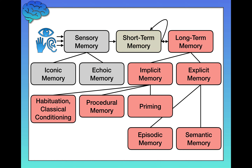Let's talk about long-term memory. There are a lot of different systems here, but we're going to focus on different parts at a time, starting with the right-hand side — explicit memory, which is subdivided further into episodic and semantic memory. I really encourage you to learn the structure as I'm showing it to you, because if you try to learn all these terms in isolation it will be very hard to remember where each one fits.